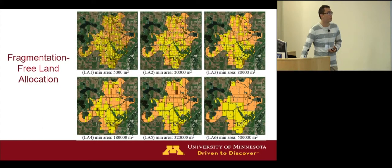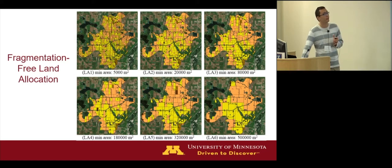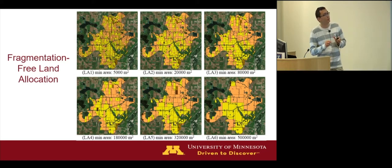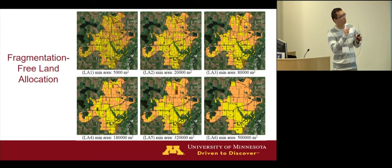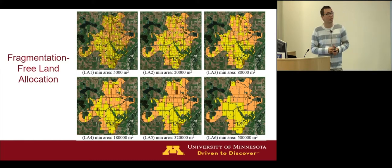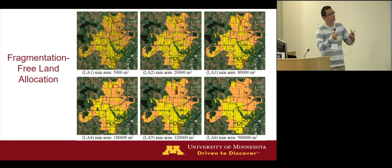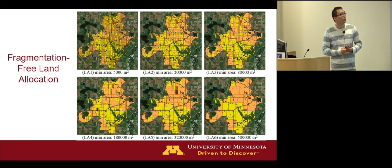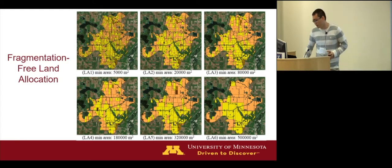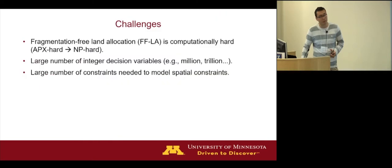This map shows different solutions of fragmentation-free land allocation. From map to map, we increase the minimum area constraint for each patch. You can see that we achieve the desired level of spatial contiguity during the optimization process by adding those constraints, making the result practical for farm equipment operation.